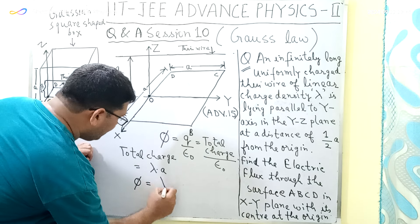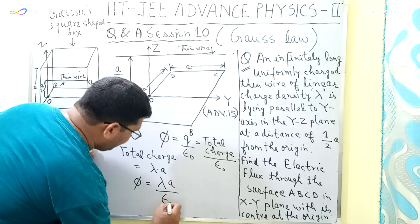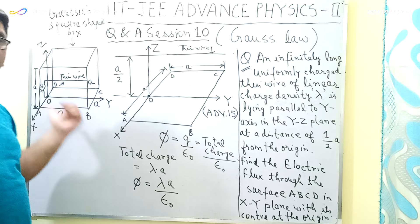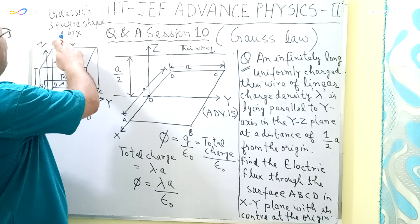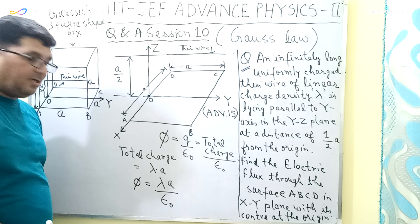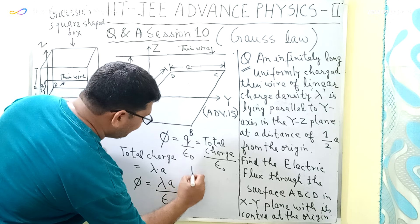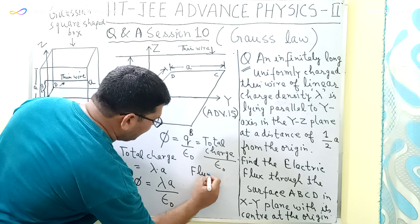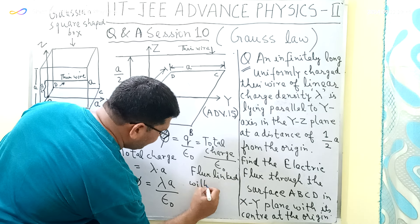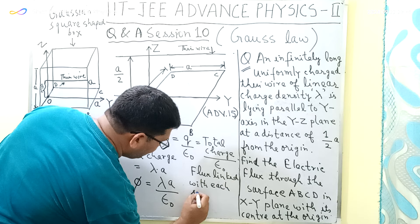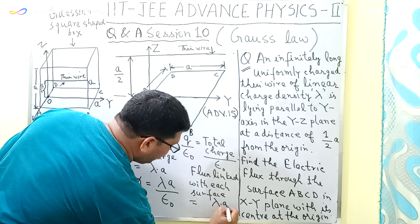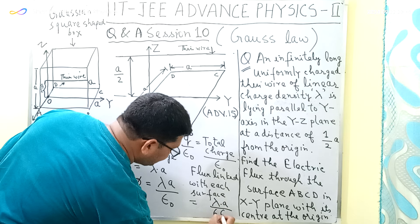So the total flux associated with this Gaussian square-shaped box will be equal to lambda·A divided by epsilon naught. Now, since the area of each side of this Gaussian surface is equal, the flux linked with each surface will be equal to lambda·A divided by 6·epsilon naught.